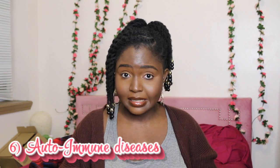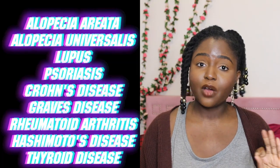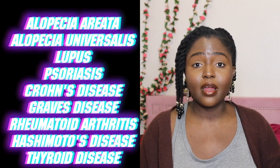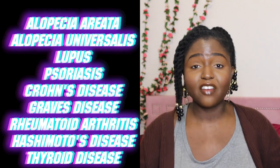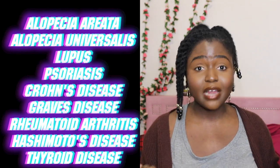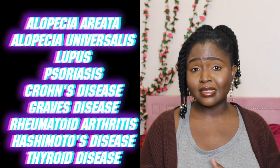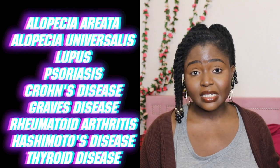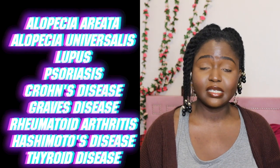Number six, we have autoimmune diseases. Think alopecia areata, where your immune system attacks your hair follicles on your head, or alopecia universalis, where it attacks all hair follicles — your eyelashes, eyebrows, entire body. Other autoimmune diseases like lupus, psoriasis, Crohn's disease, Graves' disease, rheumatoid arthritis, and Hashimoto's disease can also lead to hair loss. Sometimes even the medications taken for these diseases are what actually cause the hair loss.